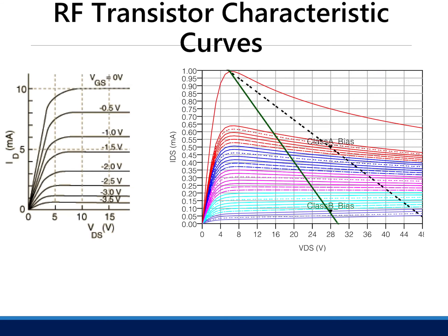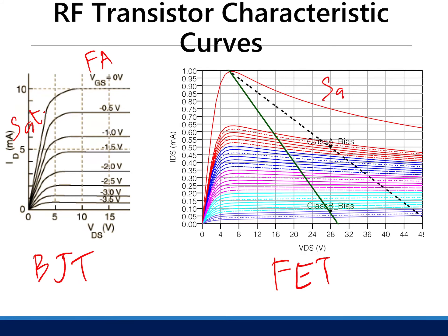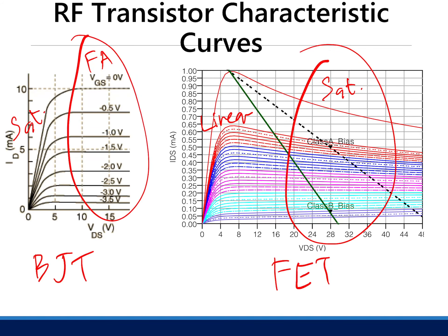Regarding the characteristic curves of transistors: for your BJT, there is a forward active region and a saturation region. For your FET, there is a saturation region and a linear region. For amplifiers, we want to operate in the saturation region for FETs and the forward active region for BJTs. If you want to use transistors as mixers, you operate where gm varies greatly with respect to time.